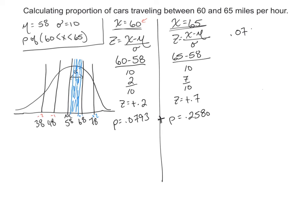So .0793 plus the proportion of the ones going a little bit faster, .2580, and I get .3373.